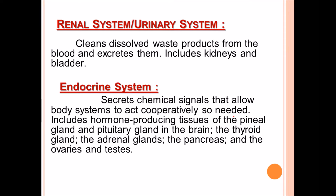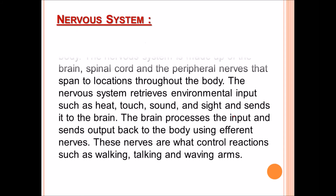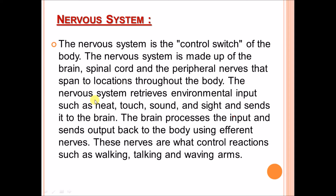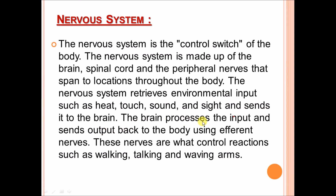The nervous system is the control switch of the body. It is made up of the brain, spinal cord, and peripheral nerves that span to locations throughout the body. The nervous system receives environmental inputs such as heat, touch, sound, and light, and sends them to the brain, which processes them.